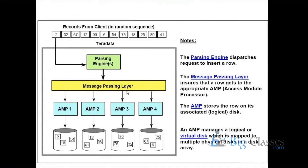For a single node, how many parsing engines can we make? Collectively we can have 128 processes, so mostly the PEs will be less than the AMPs in general.